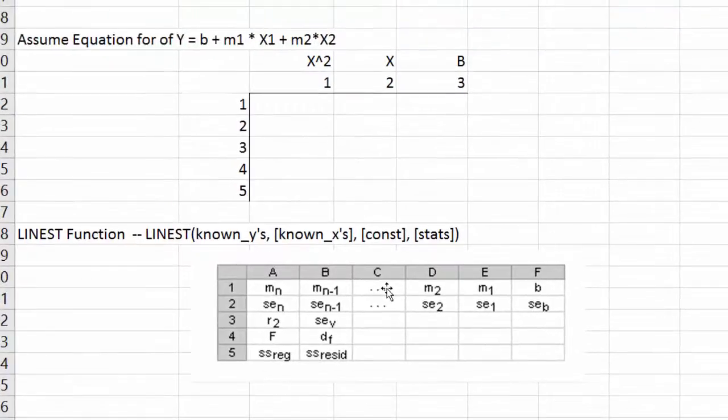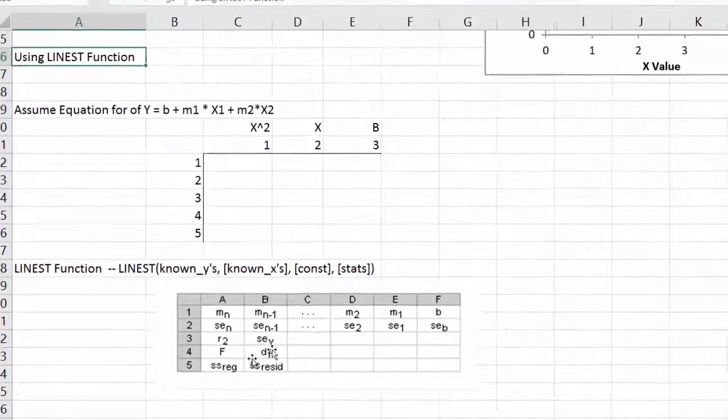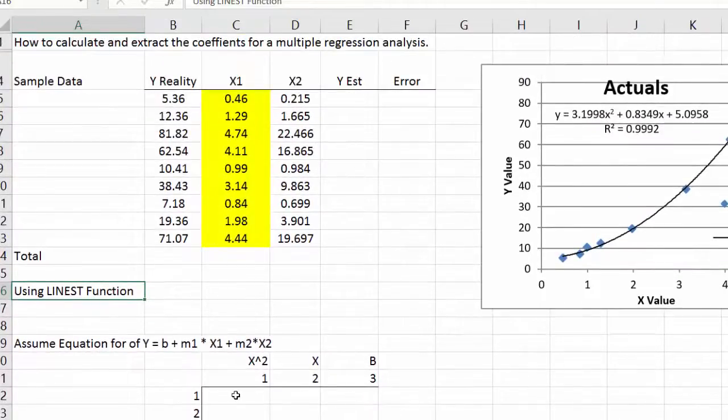So in our example the far right column is our b or our constant. The m1 is going to be x and the m2 is going to be x squared. And then there are the other statistics down here. So how are we going to do this without using the array function?